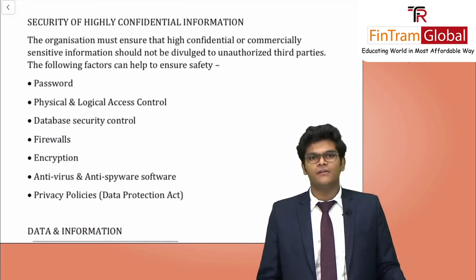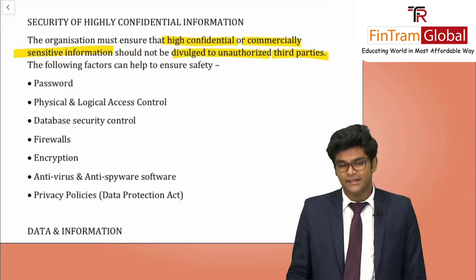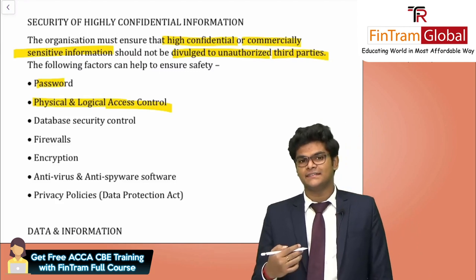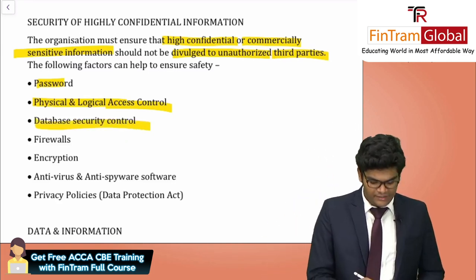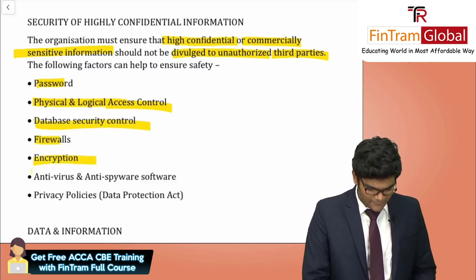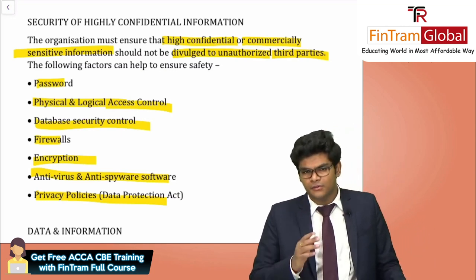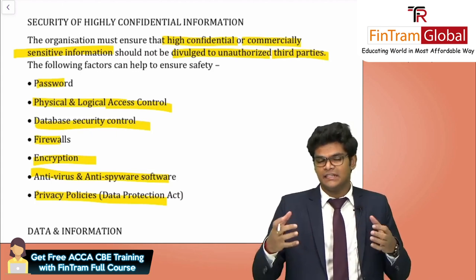To secure highly confidential or commercially sensitive information, organisations must ensure it is not divulged to unauthorised third parties. Safety measures include setting up passwords, implementing physical and logical access controls (e.g., server rooms), database security controls like firewalls and encryption, antivirus and anti-spyware software, and privacy policies.